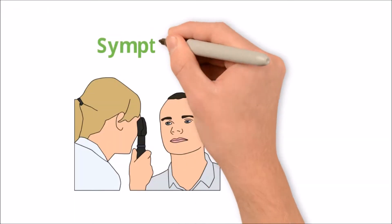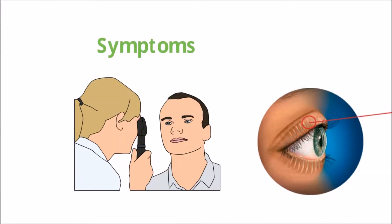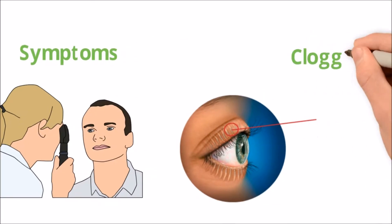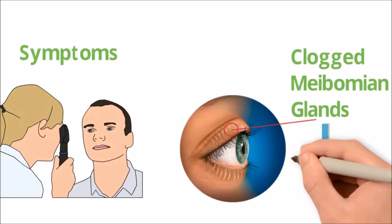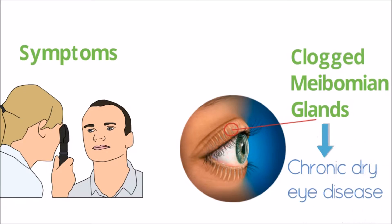Today's options treat the symptoms. However, the root cause of dry eye disease is clogged meibomian glands. Clogged meibomian or obstructed glands lead to chronic dry eye disease.